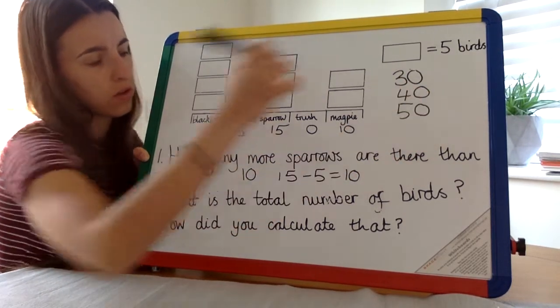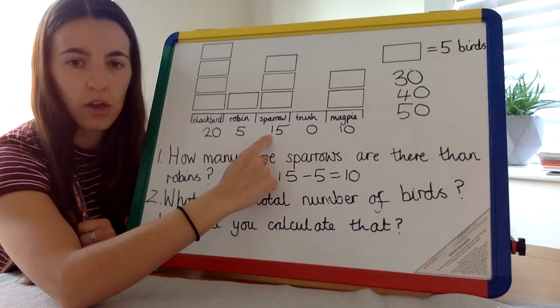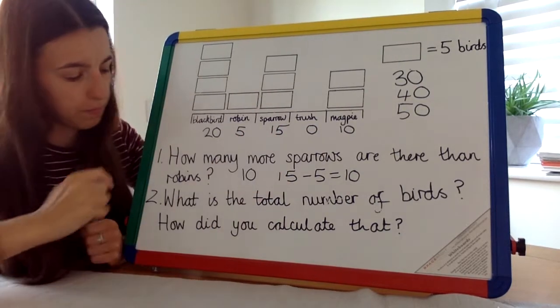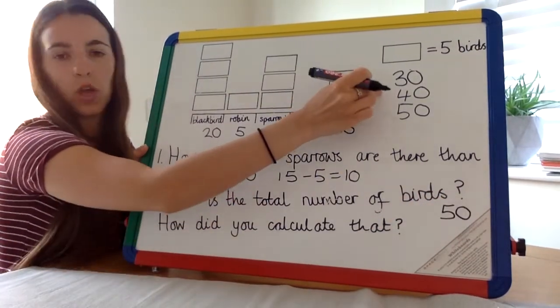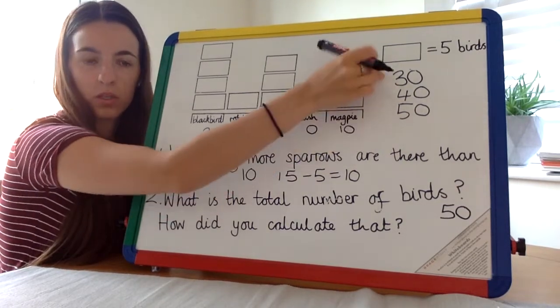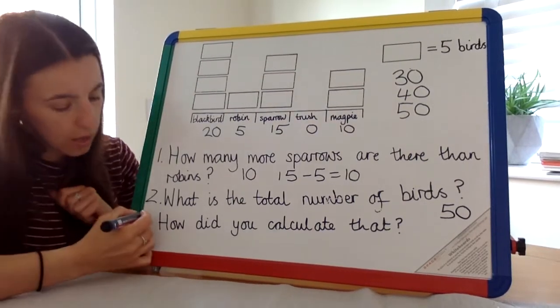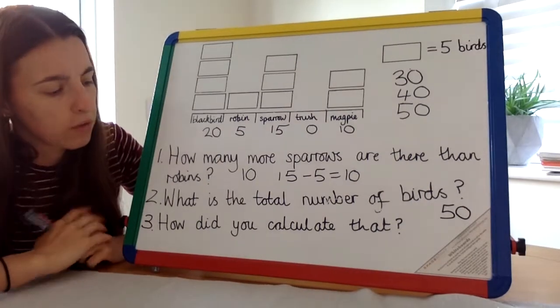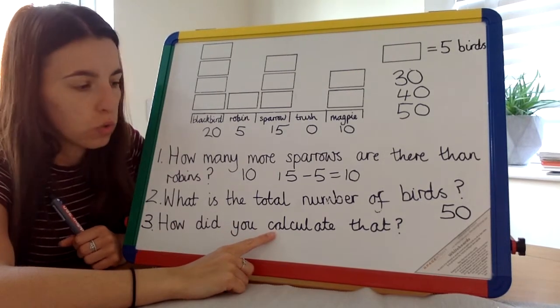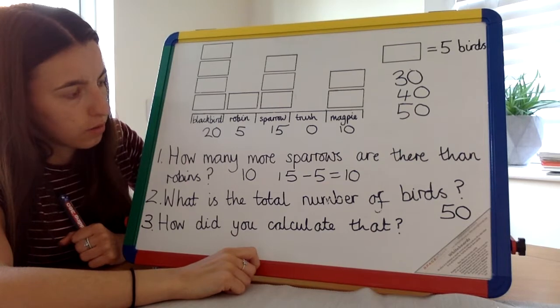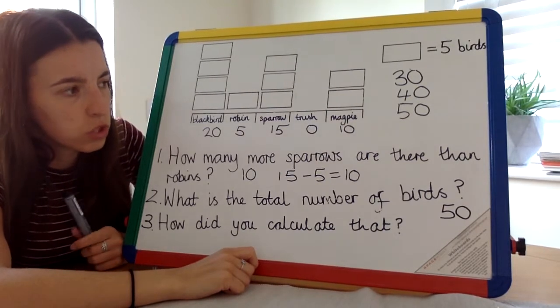So that equals 50. 20 add 10 is 30, add another 10 is 40, 5 add 5 is 10, so that would be 50. The answer is 50. Don't worry about making notes. If you need to write something down to help you work it out, that's totally fine. Question 3: How did you calculate that? How did you answer this question? What did you do to get that answer? I added the tens first and then the ones. How else could you have done it?